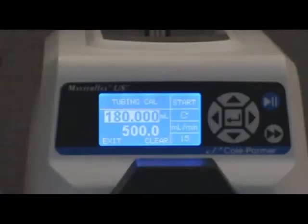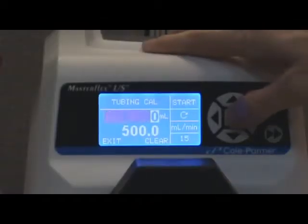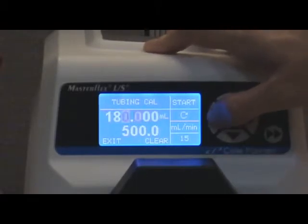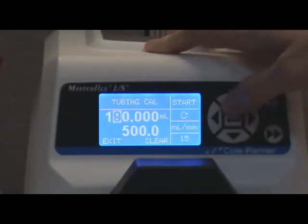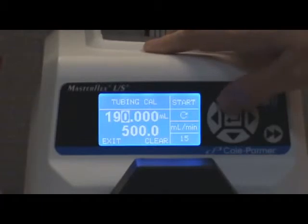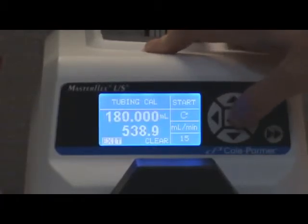After the pump has stopped, read the amount in the graduated cylinder. Be sure to read the bottom of the meniscus in order to obtain accurate results. After reading the volume in the cylinder, the cal volume field will be highlighted. Press the enter button and adjust the volume to match your result. The volume that was pumped in our example was 194 milliliters. Then press the enter button once more to confirm your value.